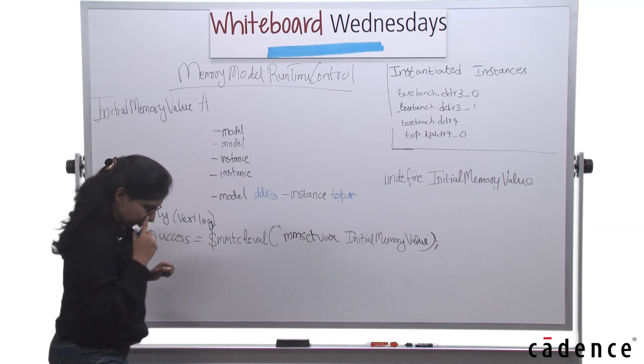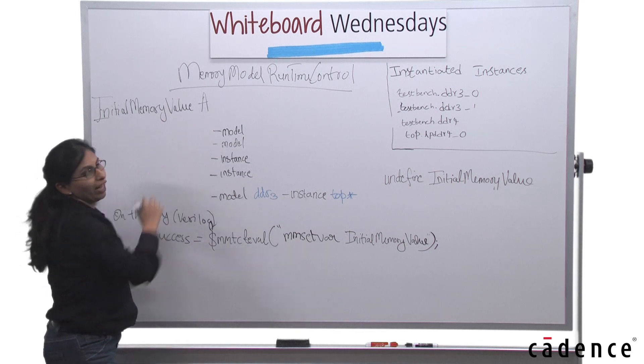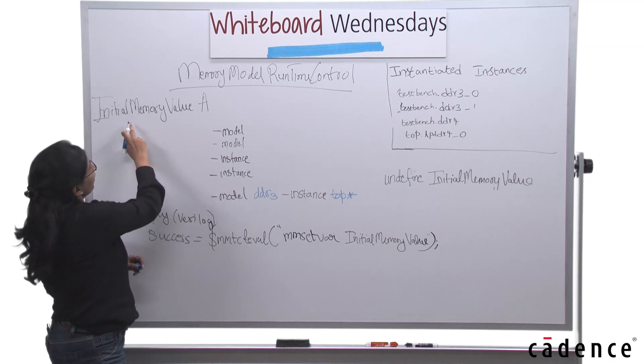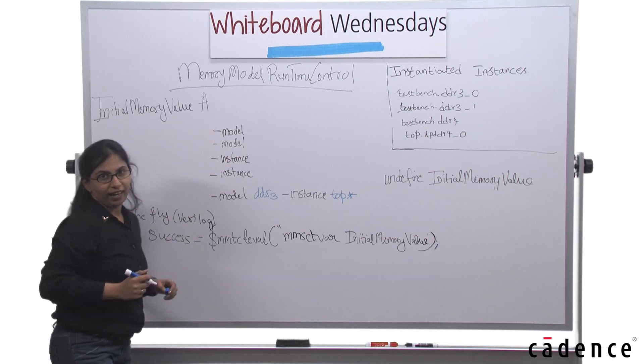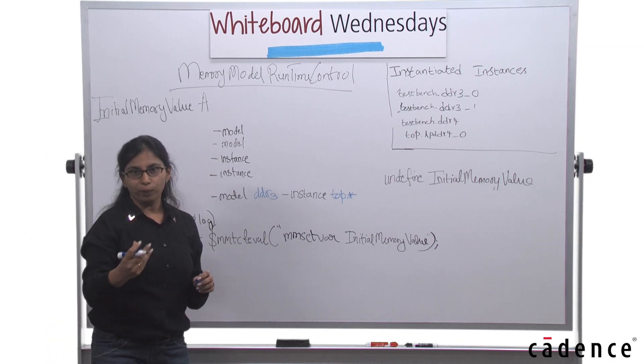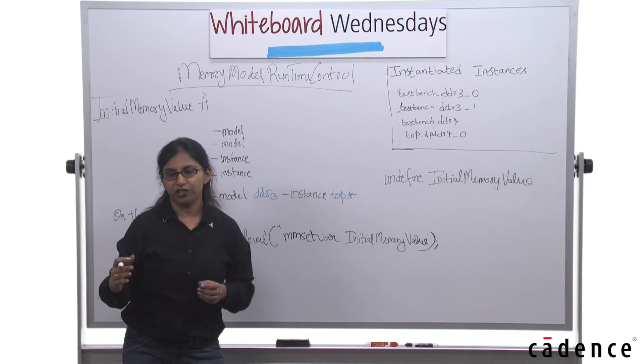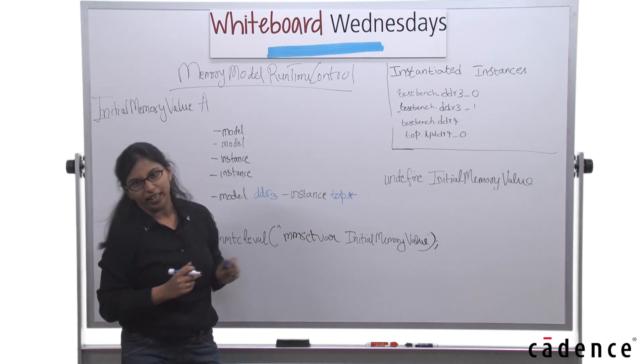So you could use initial memory value as the .denali-rc switch that we are considering. So if you set initial memory value A, this means that all the instances of your simulation will take the value A.